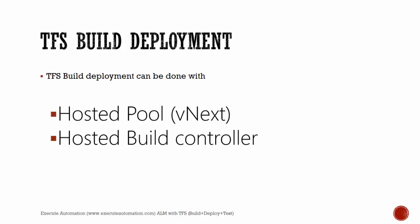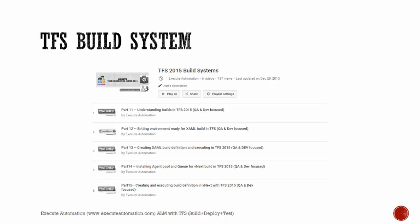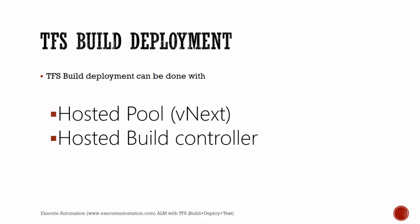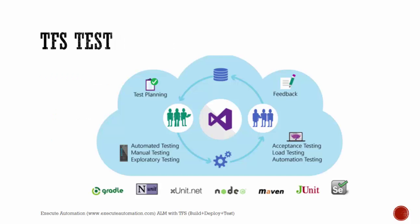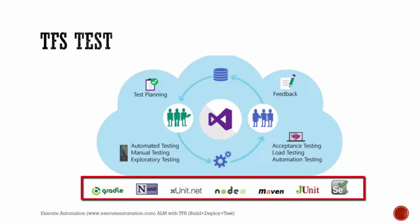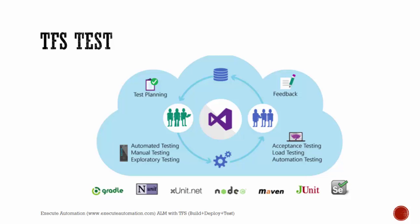That's covered in our TFS build system playlist on the Execute Automation YouTube channel. TFS test is very interesting and exciting in Team Foundation Server 2015 because it supports a lot of testing frameworks like xUnit, NUnit, xUnit .NET, Node.js, Maven, JUnit, and Selenium — which is pretty exciting. As shown in this diagram, you can do test planning, automated testing, manual testing, and exploratory testing, and also acceptance, load, and automated testing, while sending feedback as a report.